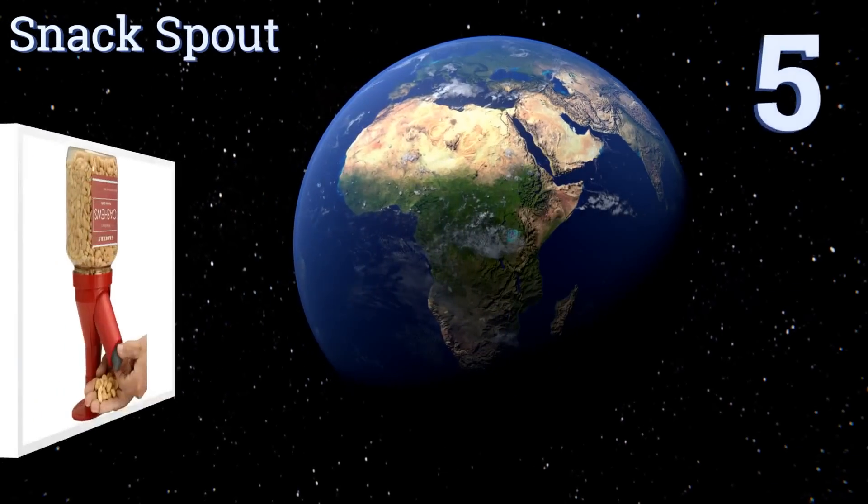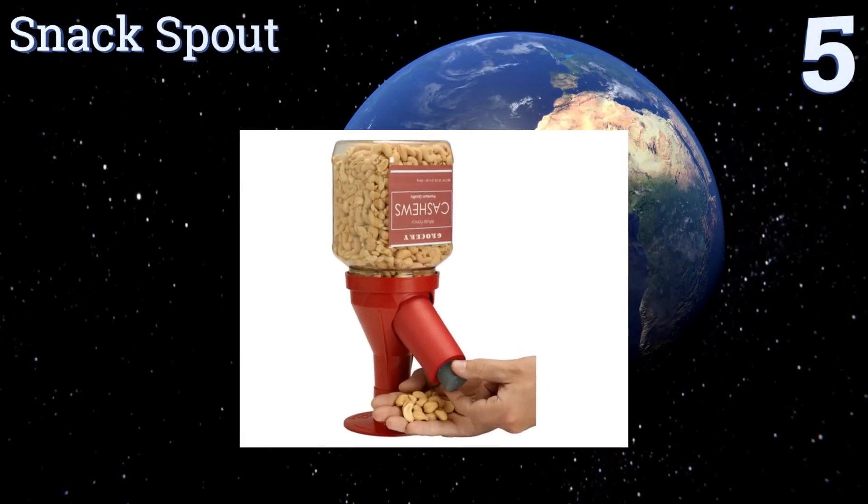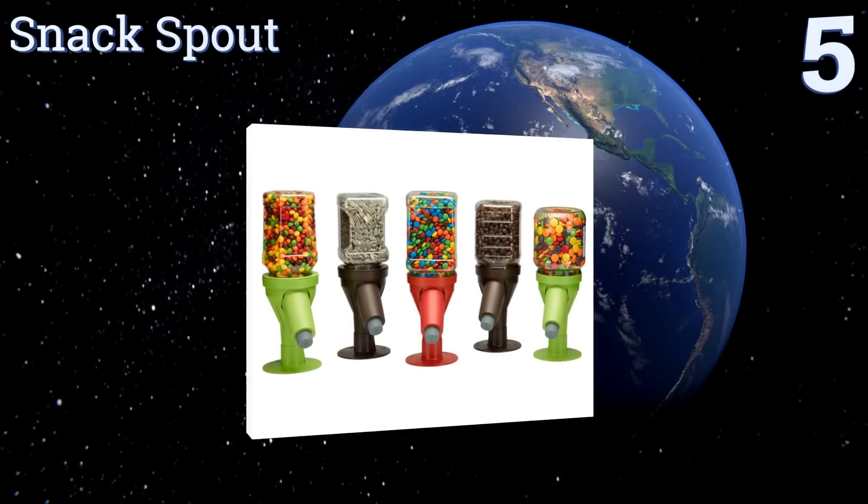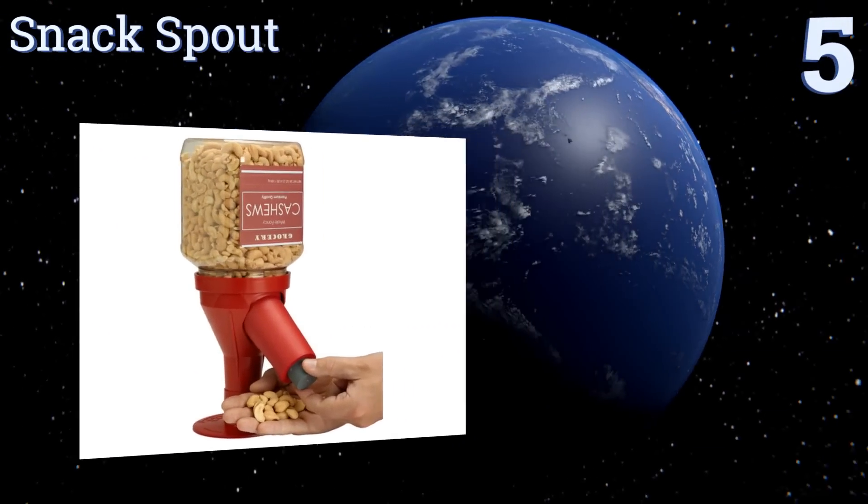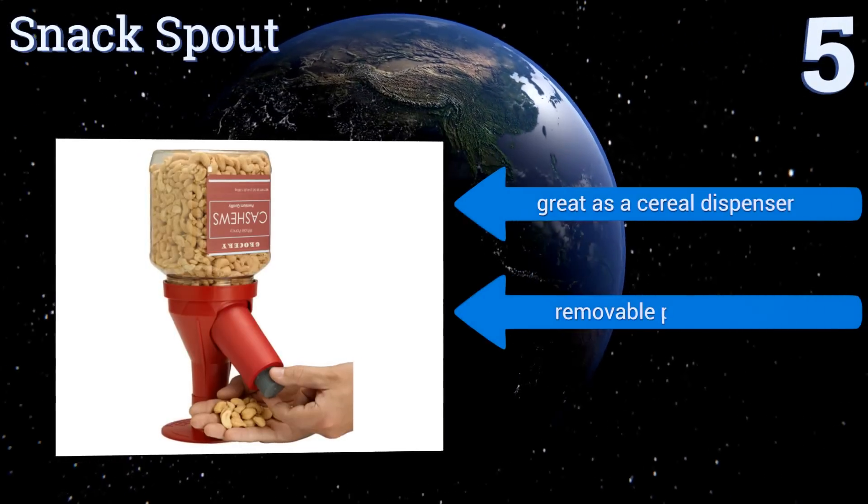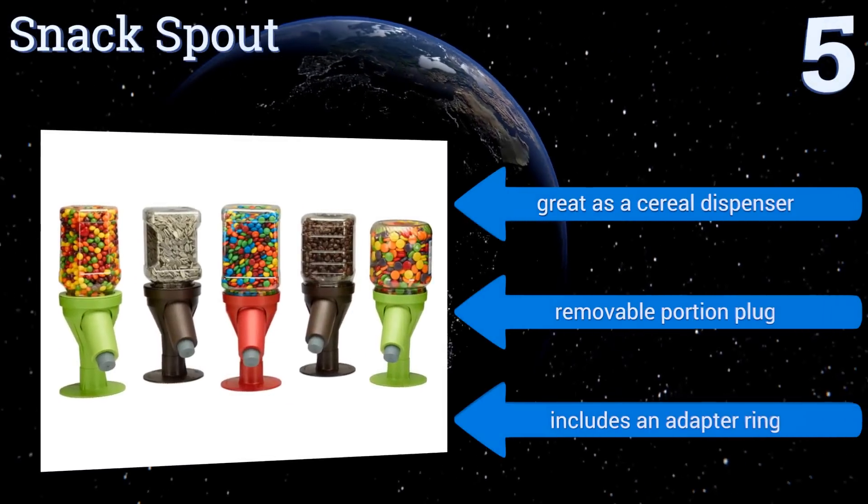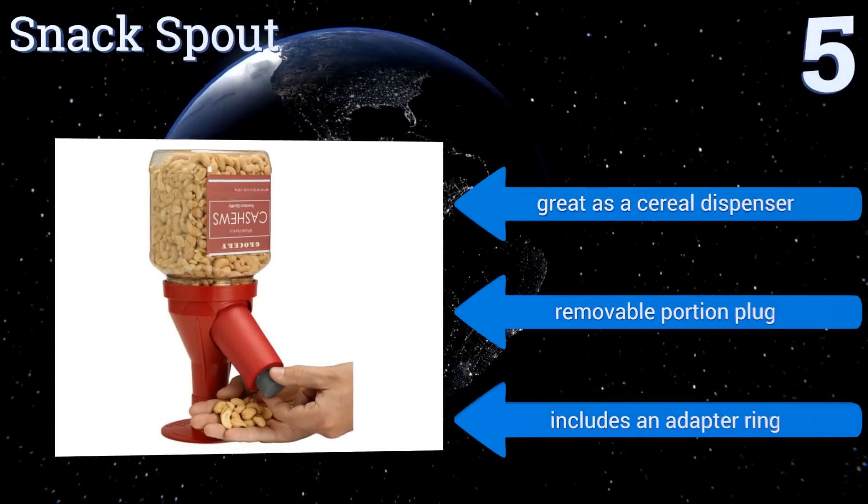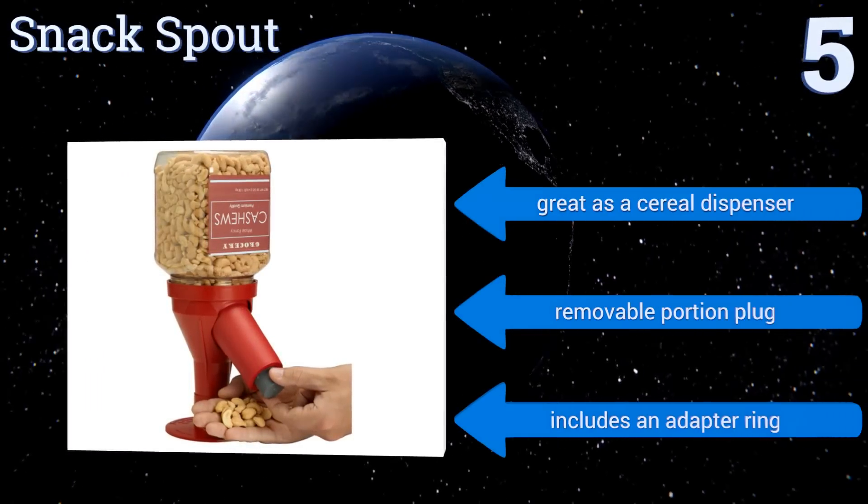Halfway up our list at number 5. The Snack Spout features an ingenious design that allows you to screw on any large nut or candy jar onto the stand for a sanitary way to munch on your favorite goodies. It's great for kids to foster independence while keeping their grubby hands out of the jar. It's great as a cereal dispenser too and comes with a removable portion plug and an adapter ring.